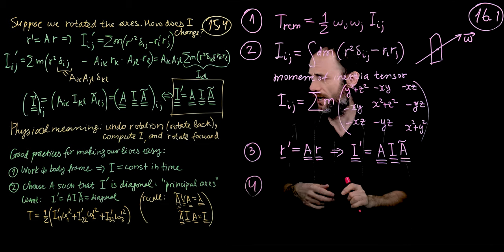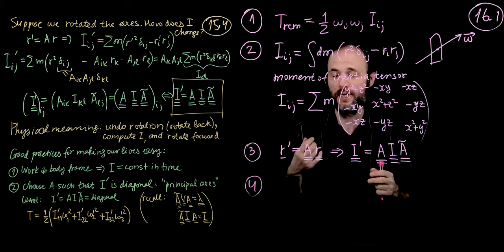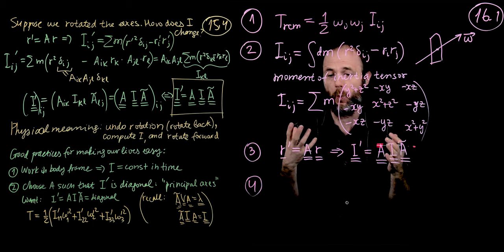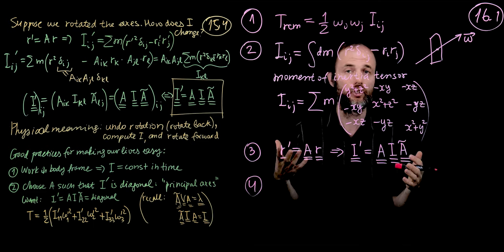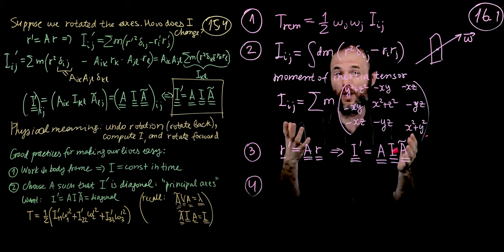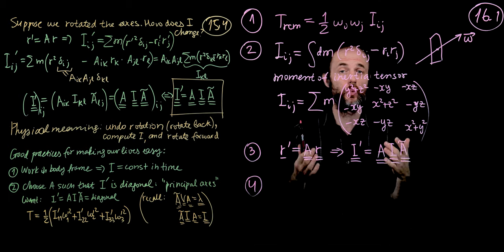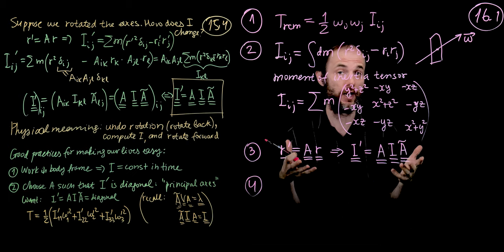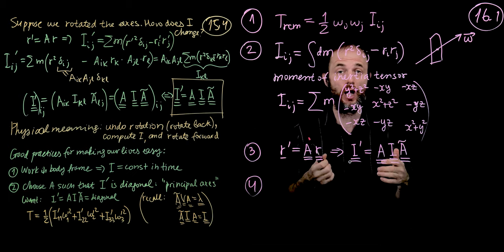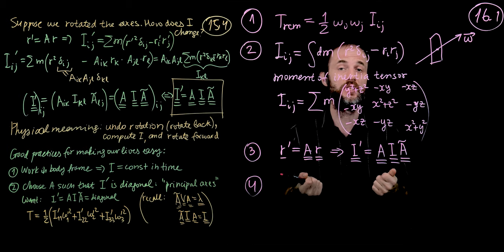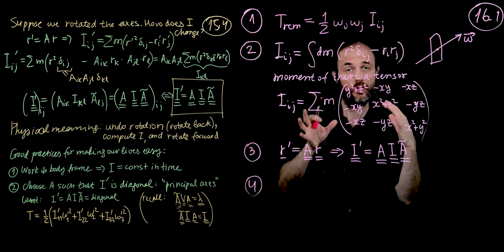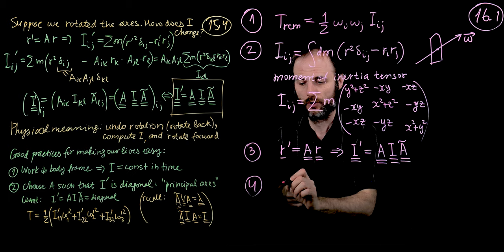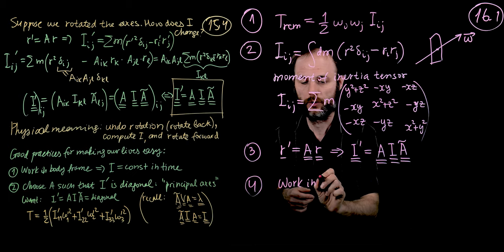Finally, the last thing I wanted to overview is how we approach the moment of inertia tensor and work with it. The most natural way is to work in the body frame. We pick a frame that is baked into our rigid body. If we're considering rotation of the Earth, we plant our three axes X, Y, and Z into the Earth so that as the Earth rotates, the axes rotate together with it. That is called the body frame.